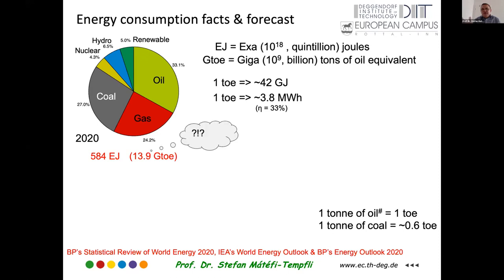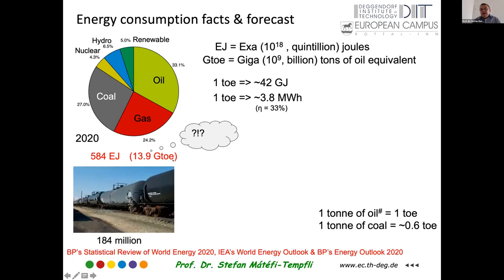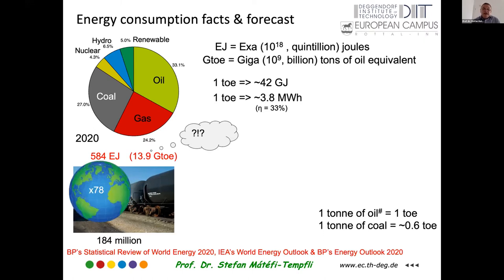What does that mean? If we are looking at that amount of gigatons of oil and thinking of rail tanker cars, we can fill nearly 180 million of such rail tanks with the amount of energy that we are using each year. That is a huge amount of energy. If we would make a train out of that, the length of the train would be 78 times the perimeter of the Earth. So you can have an idea about the amount of energy that we are using right now.